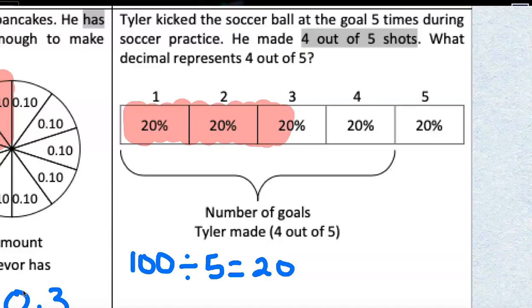He made four out of the five shots. 20, 40, 60, 80. So, we know that he made 80% of the shots. What decimal represents four out of five? So, we know that four-fifths is the same as 80%. So, how would we change 80% to a decimal?